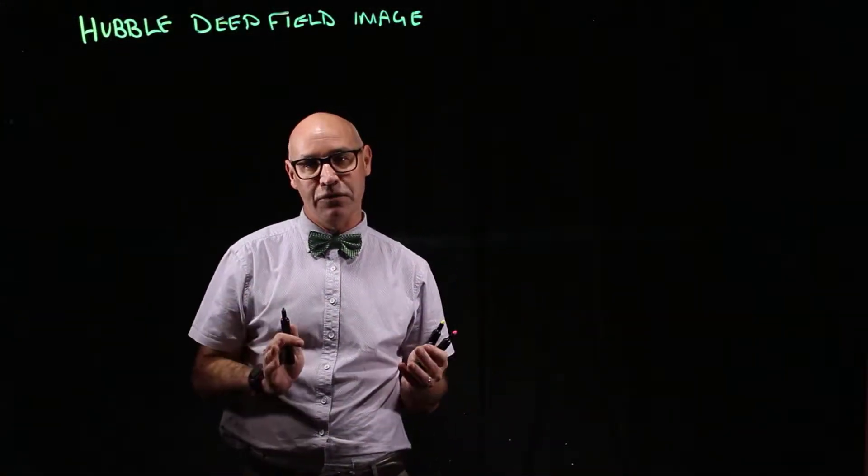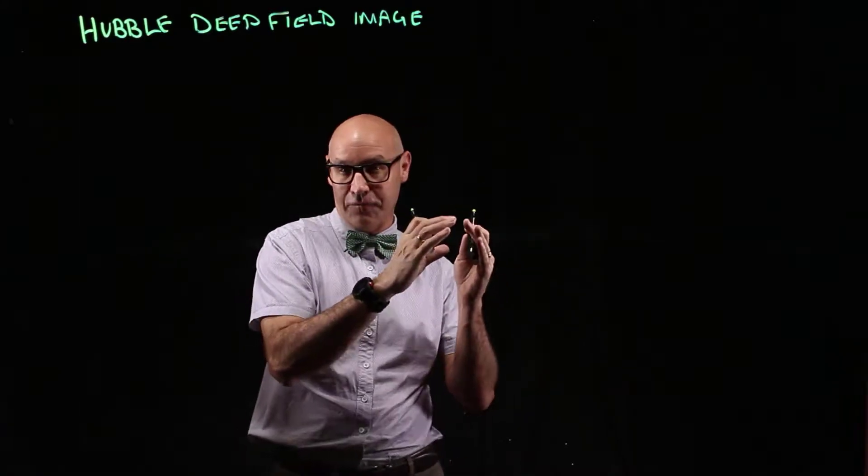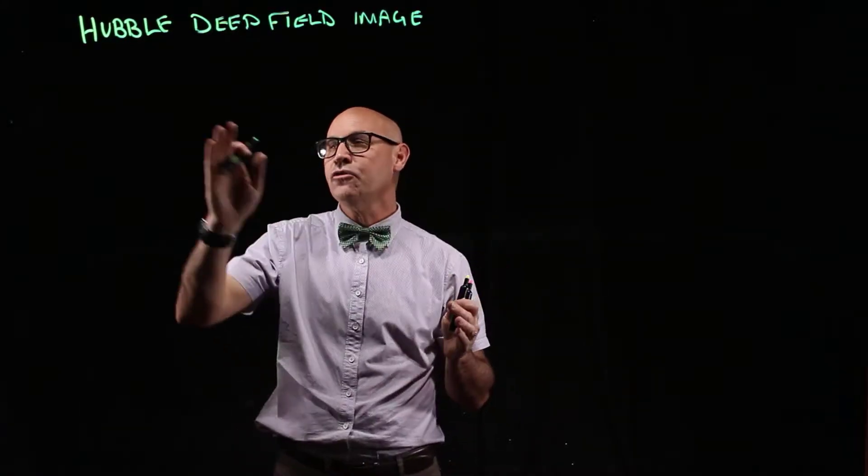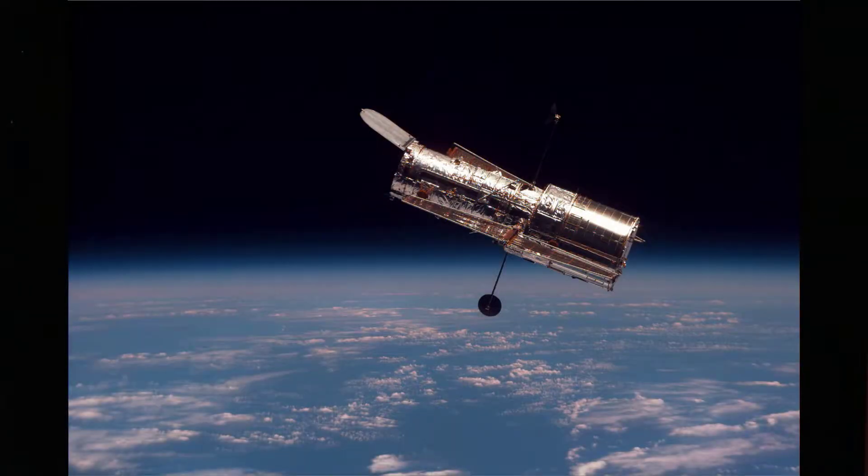The Hubble Deep Field is an image of a very small part of the sky. It's called the Hubble Deep Field because it was taken by the Hubble Space Telescope.